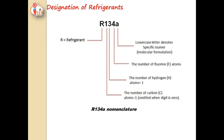Regarding the designation of refrigerants, take R134A as an example. The letter 'R' stands for refrigerant. The first digit represents the number of carbon atoms — here '1' means one carbon atom; if no carbon atom is present, that digit is omitted. The next digit '3' represents the number of hydrogen atoms, '4' represents the number of fluorine atoms, and the letter 'A' (lowercase) denotes a specific isomer, i.e., molecular formulation.